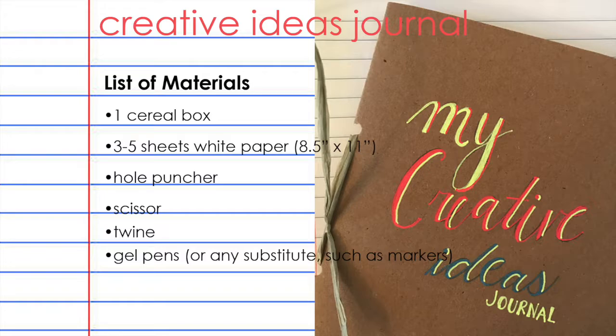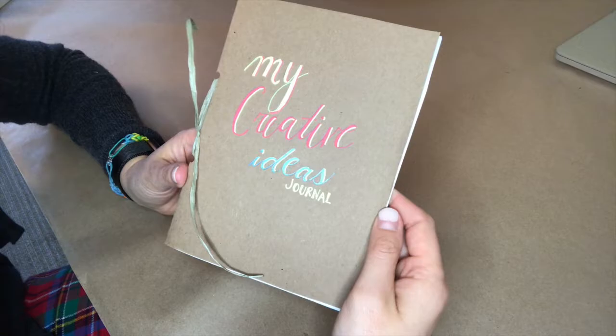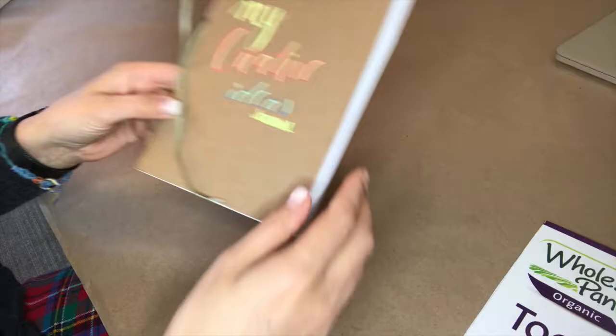To practice being extraordinary artists, we are going to make a creative ideas journal just like da Vinci had — you can keep your ideas and sketches all in one place and carry it wherever you go. Here's what you'll need: one cereal box, three to five sheets of white paper, a hole puncher, scissors, twine, and gel pens or any other substitute such as markers. I'm upcycling some cereal boxes and I'm going to show you how it's done.